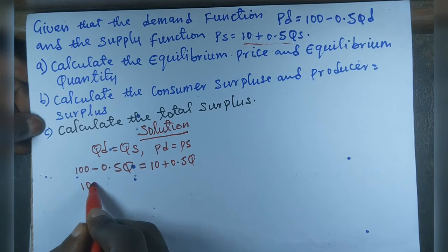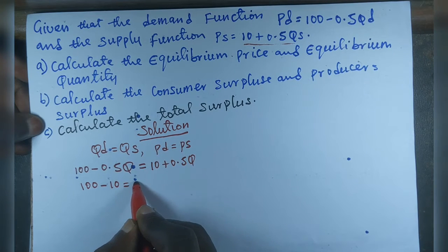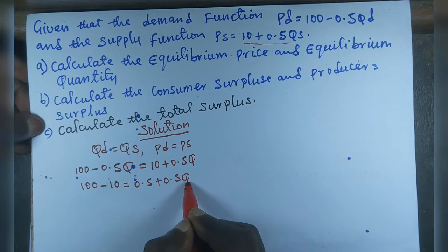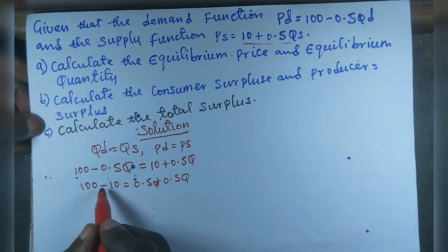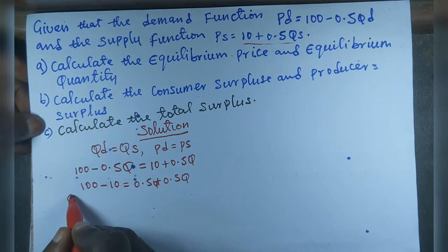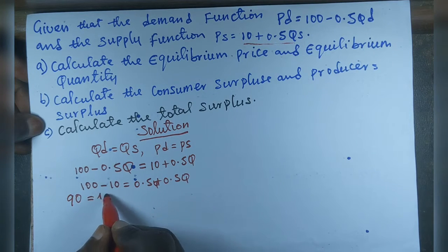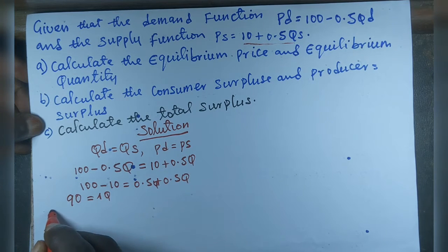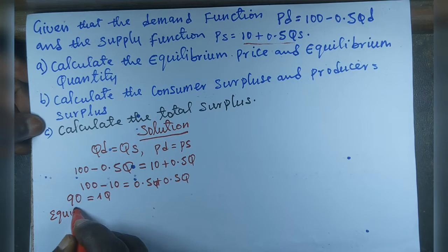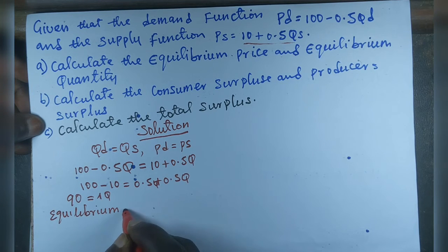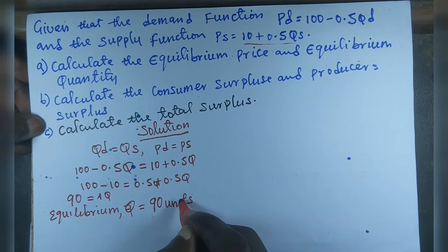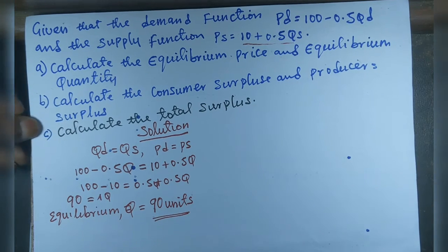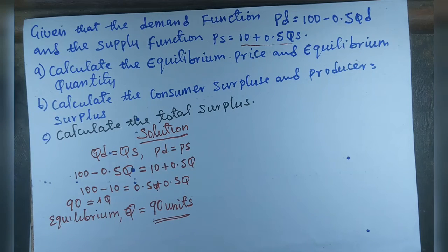Collecting like terms, we get 0.5Q plus 0.5Q on the right side, which gives us 1Q, and 100 minus 10 equals 90 on the left side. So 90 equals Q, which gives us our equilibrium quantity of 90 units.